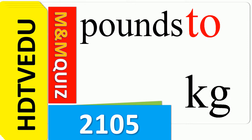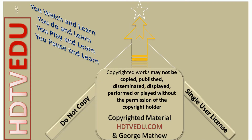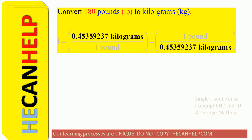Welcome to the M&M quiz. Convert 180 pounds to kilograms. Is it A: 81.65 kg, or is it B: 396.832 kg? So we have to convert 180 pounds to kg — what is it that we should do?